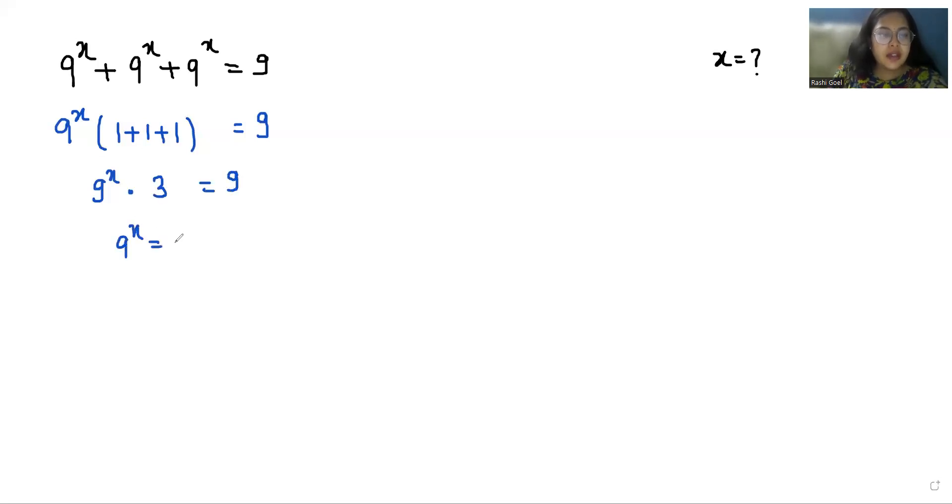9^x equals 9 divided by 3. So 9^x equals 3. We can write 9 as 3 squared.